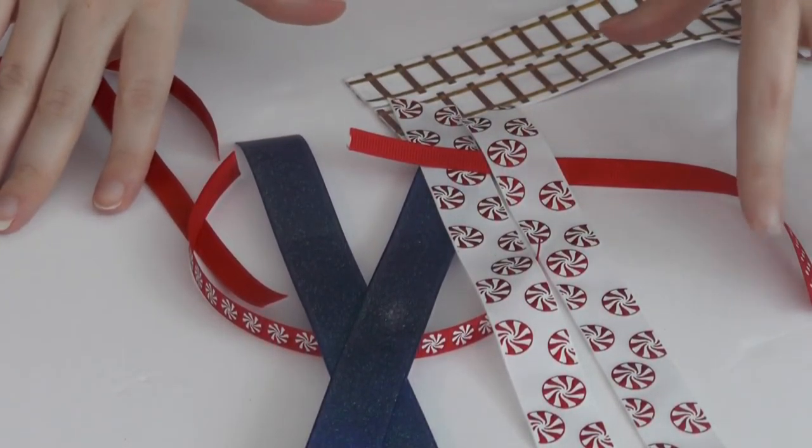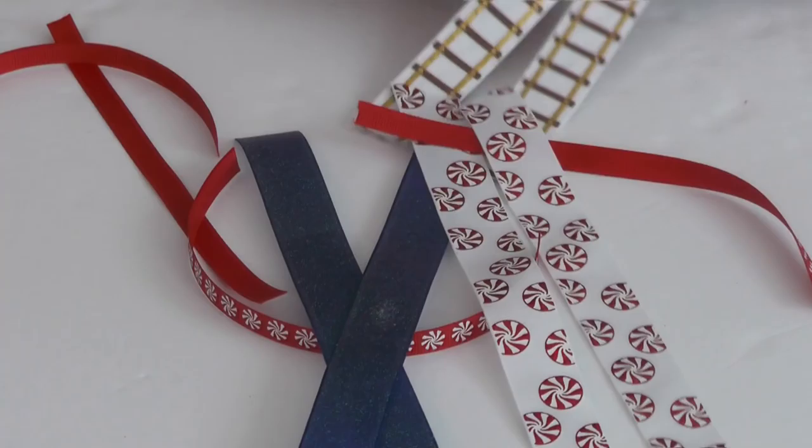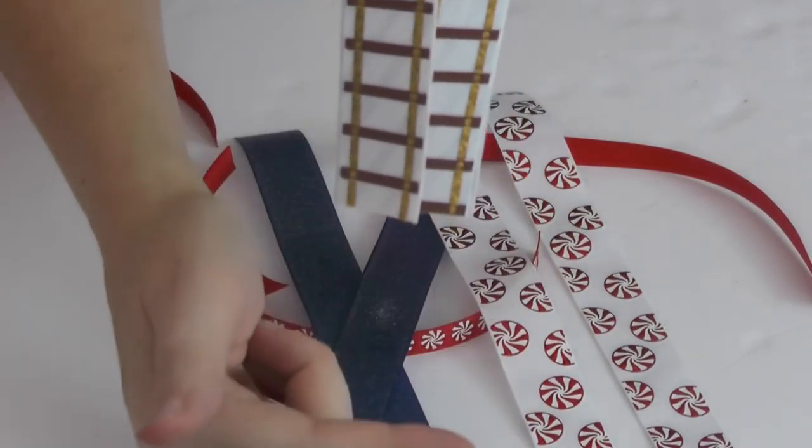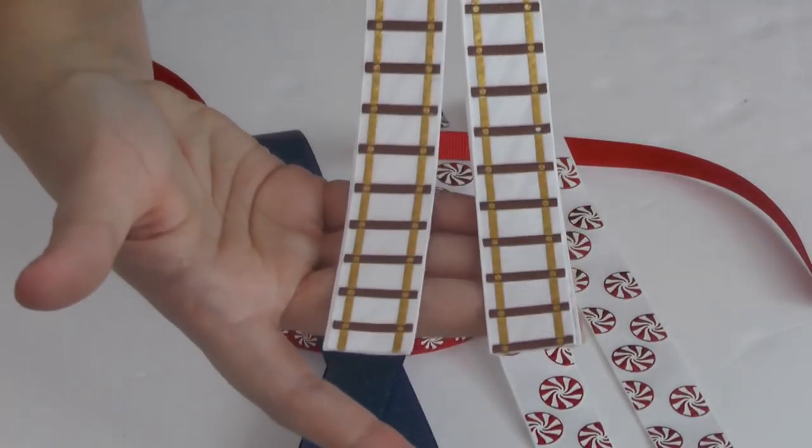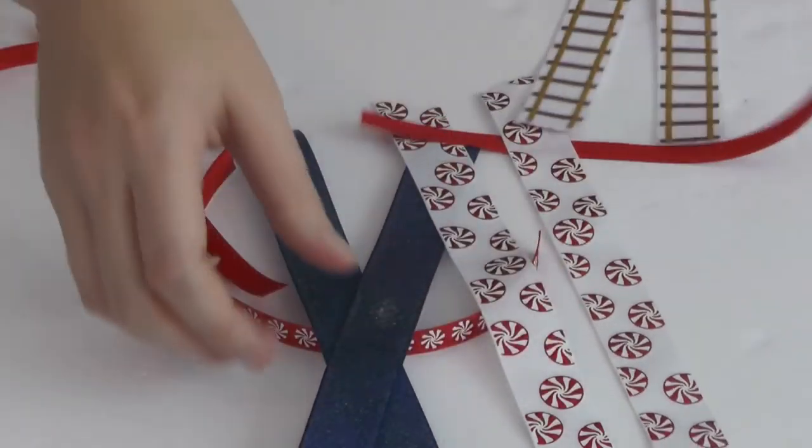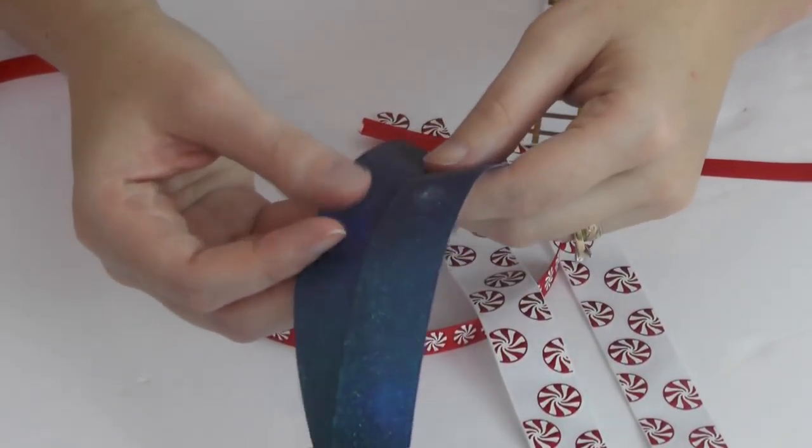Now I've got an assortment of ribbons that I'm going to use as tails or streamers, and they're going to hang behind this ribbon right here. I'm working with this - two pieces of this blue.